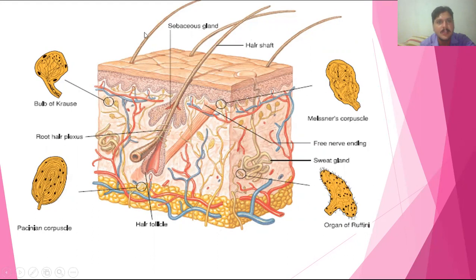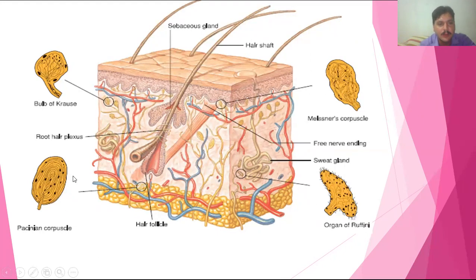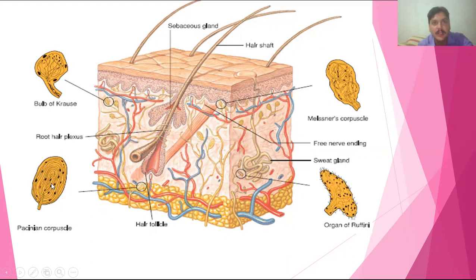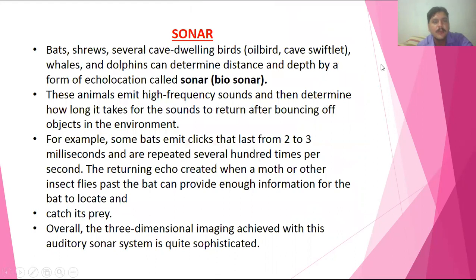Looking at the diagram, the outermost skin layer contains hair shafts. Below the skin there are multiple kinds of receptors. Meissner's capsules are present on the upper layer, while deeper receptors like Pacinian capsules and organ of Ruffini are present deeper in the skin. The organ of Ruffini receives pain sensation stimuli, while Pacinian capsules receive stimuli of pressure changes; they are also present in the joints.